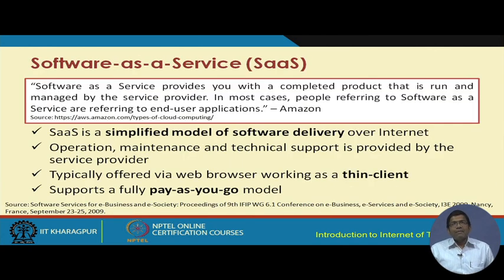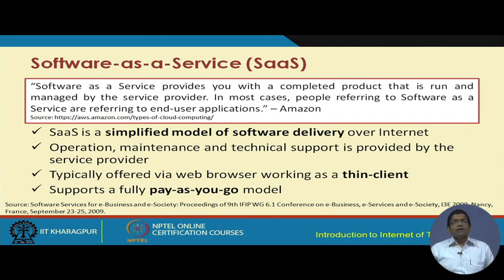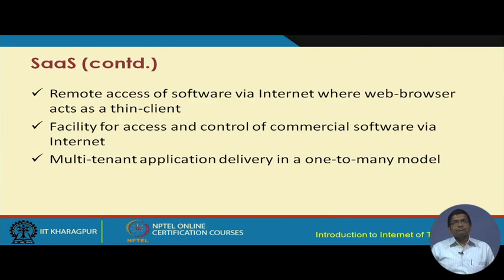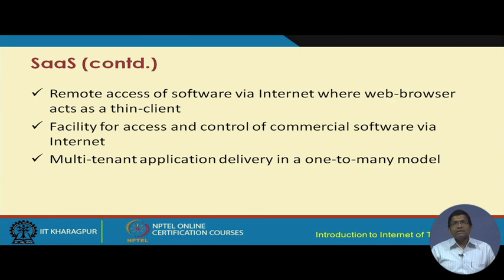Software as a Service provides a completed product that is run and managed by the service provider. In most cases, people referring to SaaS are referring to end-user applications. SaaS is a simplified model of software delivery over the internet, typically using a web browser as a thin client, and supports a fully pay-as-you-go model. Remote access of software is possible via the internet, with the web browser acting as a thin client. It also provides access and control of commercial software via the internet, and multi-tenancy application delivery to multiple tenants simultaneously in a one-to-many model.